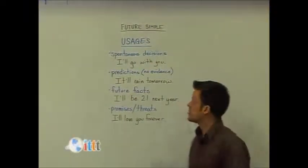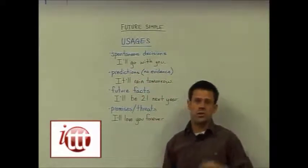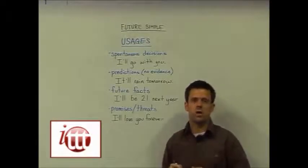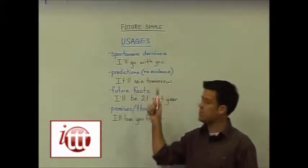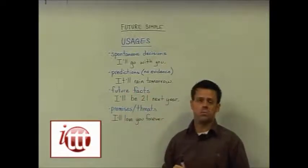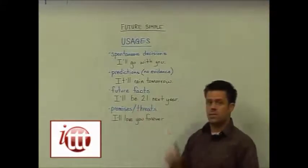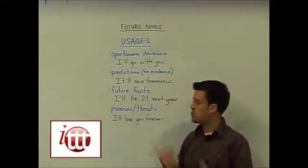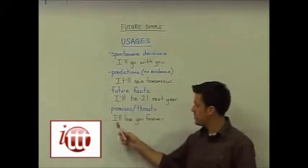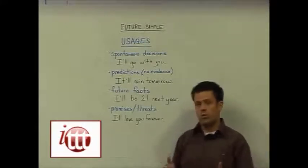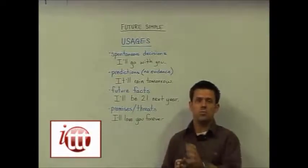The usages for the future simple are as follows. We have spontaneous decisions: 'I'll go with you' — somebody has just told you they're going to the store and you immediately decide to join them. We have predictions without evidence: 'It'll rain tomorrow' — there might not be a cloud in the sky but you still make that prediction. Future facts: 'I'll be 21 next year.' We also have promises and threats, often heard at weddings: 'I'll love you forever.' These are the four most common usages — for additional usages, please look them up in your materials.